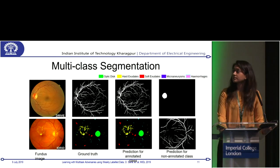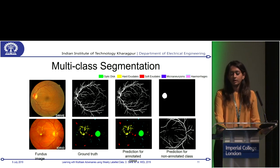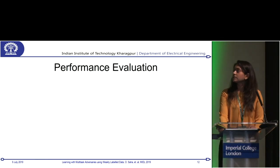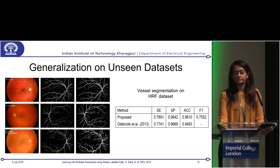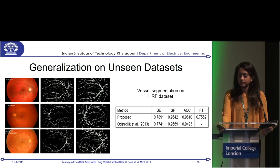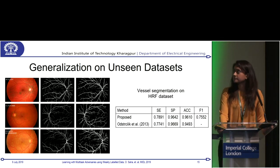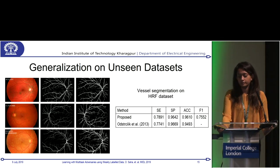For prediction on non-annotated classes, since we lacked annotations for vessels in IDRID or optic disc in DRIVE, we conducted inference-only experiments. For vessels, we used the HRF dataset with our trained model and performed inference — it performed better than the initial vessel segmentation technique proposed by the dataset publishers, and performs near recent state-of-the-art methods as well.